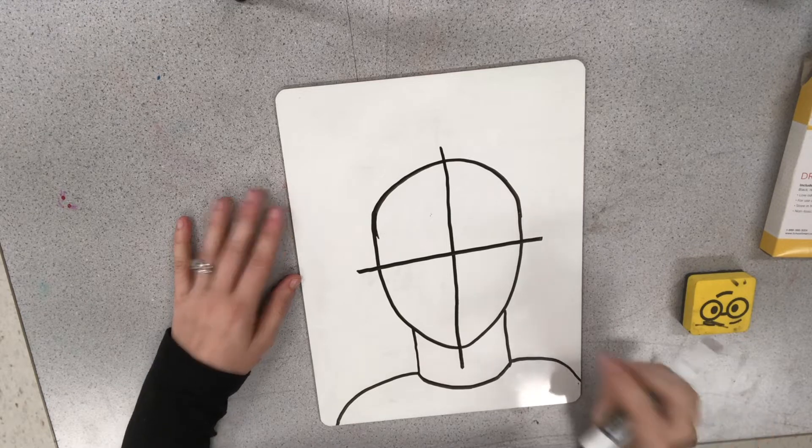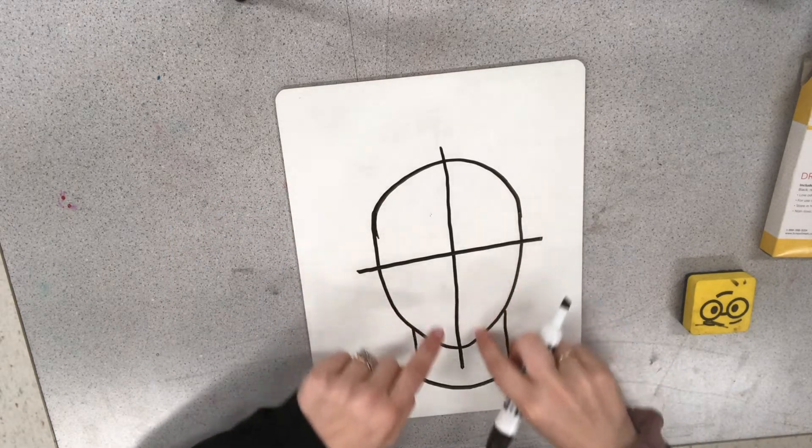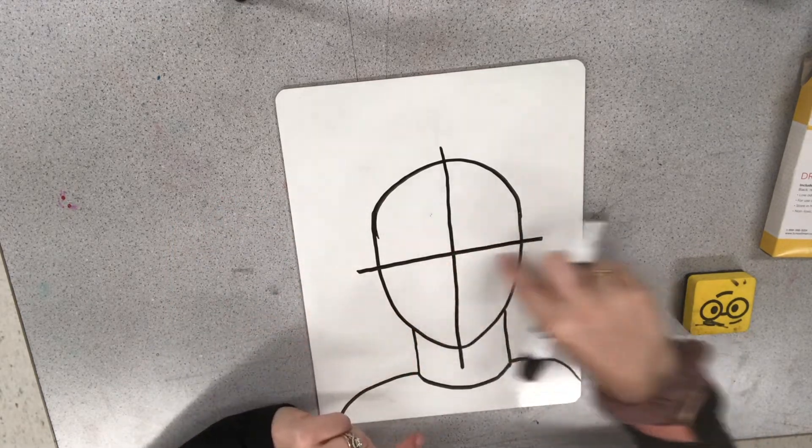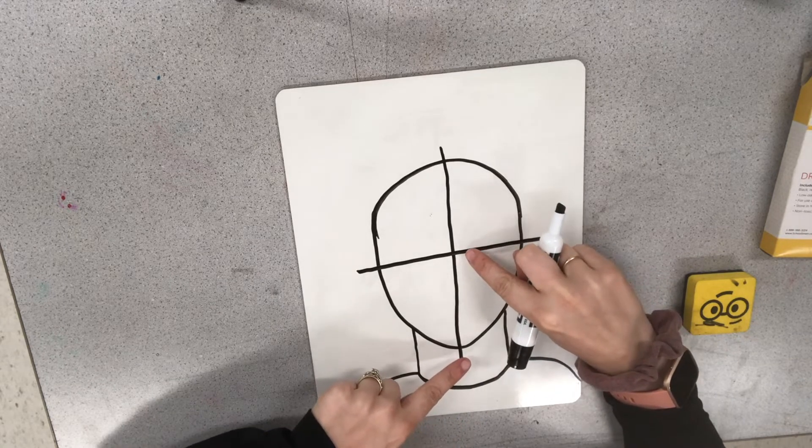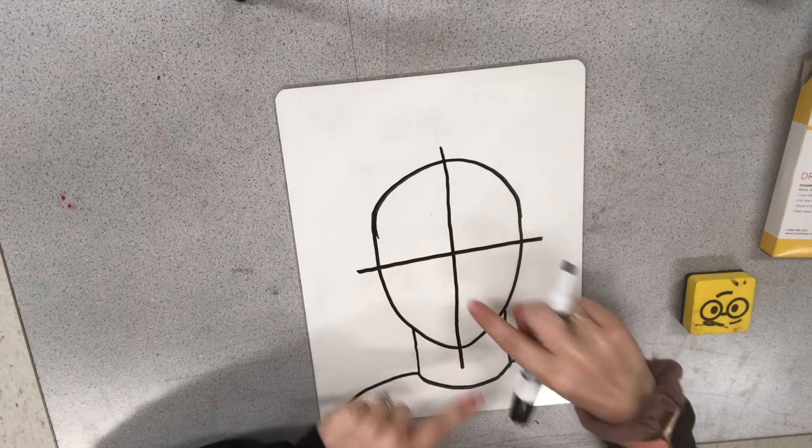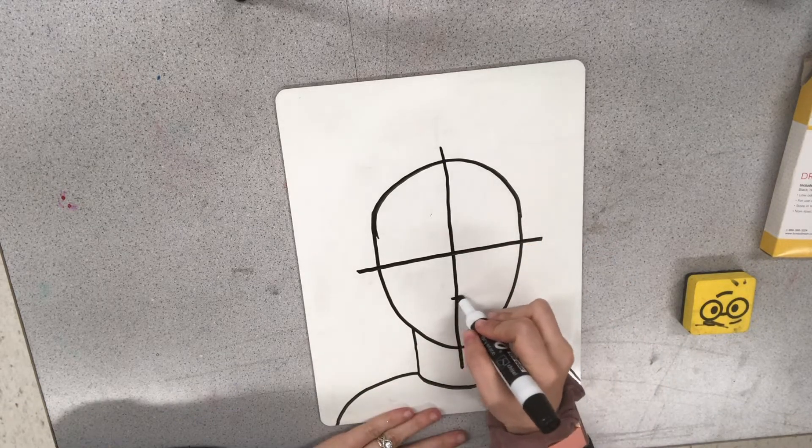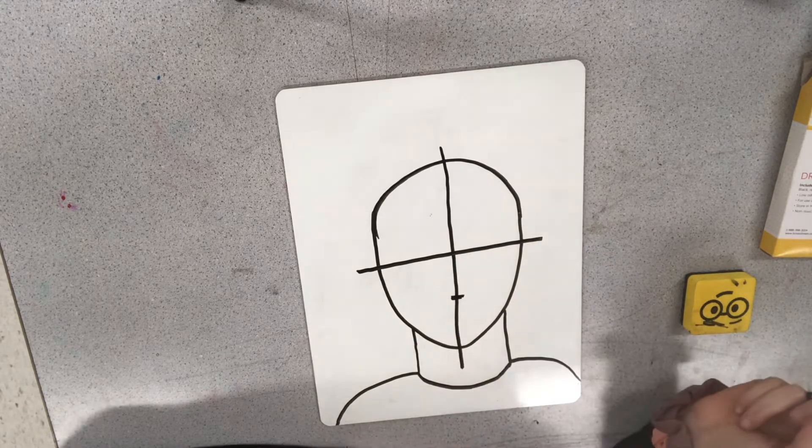The next guideline that we're going to make is going to be on the bottom half of our face. Kind of between this middle line and the chin. So we want to find the halfway point between those two lines. So that's kind of about right here. I'm making a little line there.